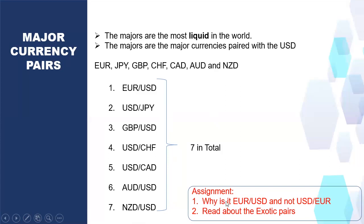The assignment I'm going to give from this page: number one — why is it EUR/USD and not USD/EUR? Why is it USD/JPY and not JPY/USD? Why is it GBP/USD and not USD/GBP? Why is the arrangement like this? Answer it for yourself — that will be for your own benefit.